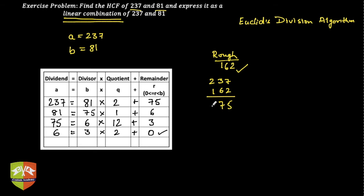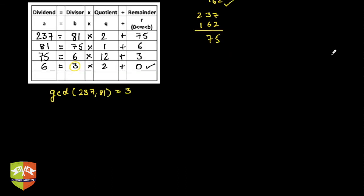Now the second part of the question is to express this GCD, which is 3. So I can write GCD of a and b, that is 237 comma 81, is equal to 3. Now what do I need to do? I have to express 3 as a linear combination of 237 and 81. How do we start? We start with the second to last step here.